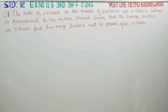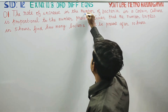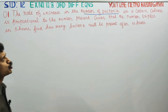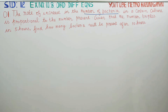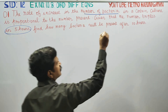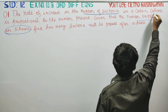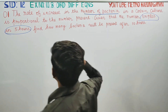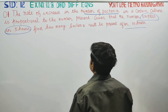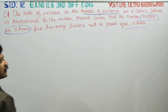Dear 12th standard students, in exercise number 10.8: the rate of increase in the number of bacteria in a certain culture is proportional to the number present. Given that the number triples in 5 hours, find how many bacteria will be present after 10 hours.